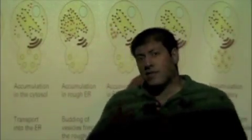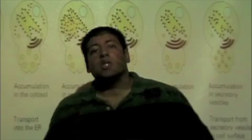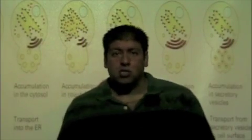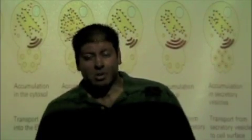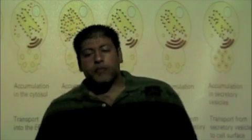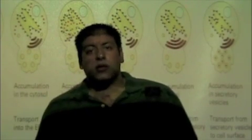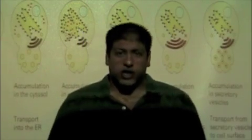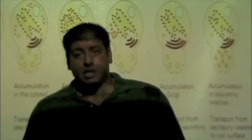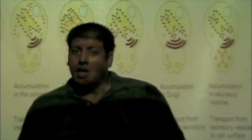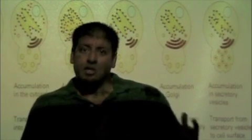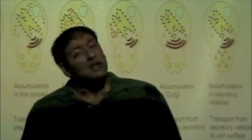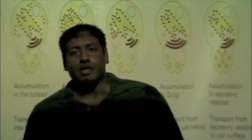The next set of experiments we looked at after the pulse chase experiment was the yeast secretory mutations. This was done by another scientist. We used yeast as our model organism to demonstrate the secretion pathway. The pulse chase experiment gave us a brief overview of the pathway — ER, Golgi, secretion — and this gave us a little bit more detail but still showed us the same pathway.